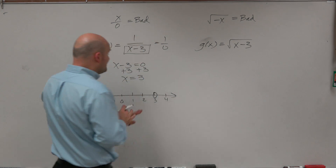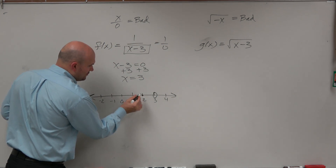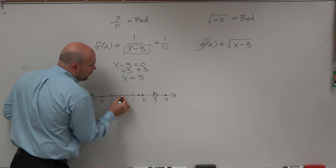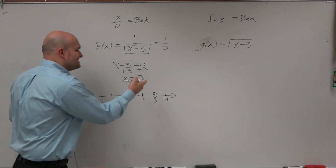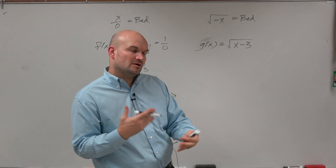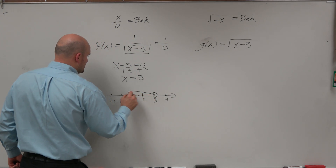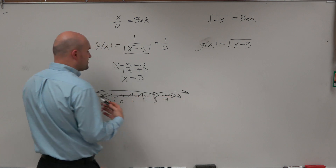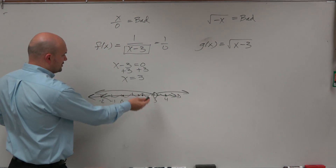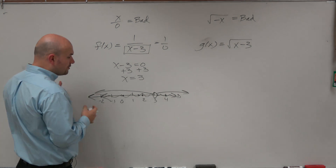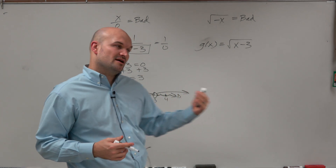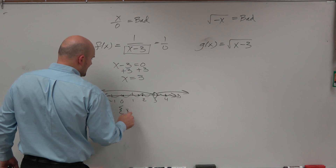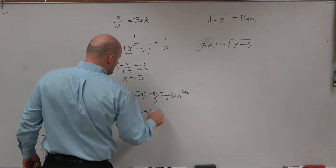To represent all the working numbers as part of the domain, I draw arrows going both directions on the number line above the hole at 3. So it's all real numbers except for the number 3. In set notation, we'd represent this as all real numbers x such that x cannot equal 3.